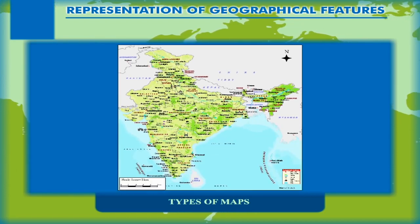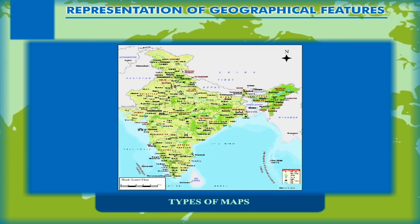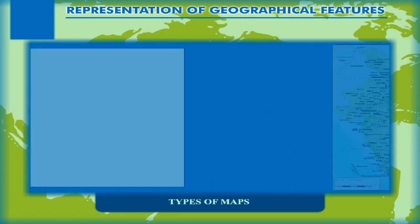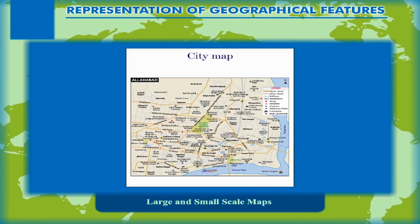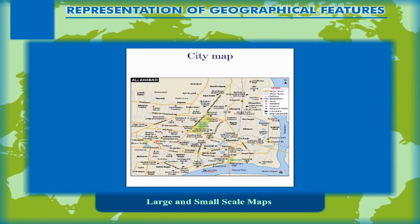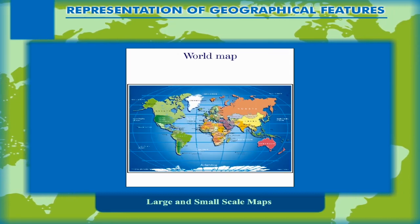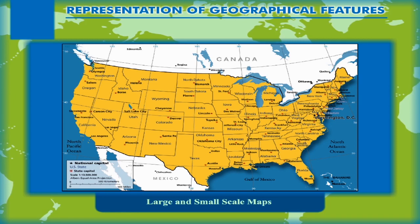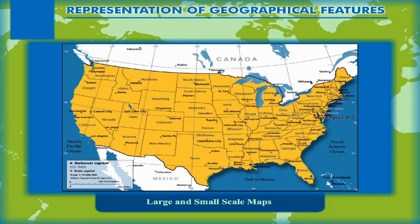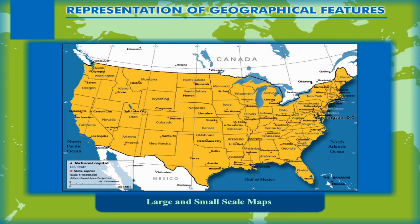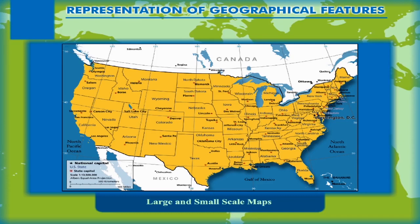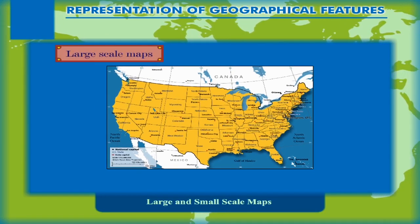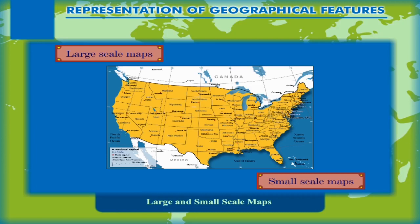Each map may be drawn at a different size. Often a book page is used to show a city but can also be used to show the world. On the basis of the size of the area drawn and the scale of the map, maps are classified into two types: large scale maps and small scale maps.